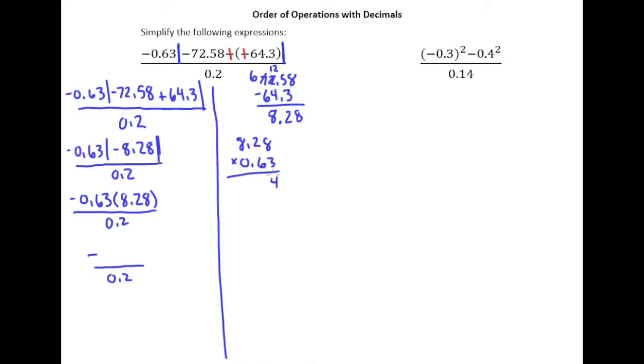So 3 times 8 is 24. 3 times 2 is 6 plus 2 is 8. 3 times 8 is 24. Put a 0 there. 6 times 8 is 48. 6 times 2 is 12 plus 4 is 16. And 6 times 8 is 48 plus 1 is 49. Add those up. We've got a 4, we've got a 16, 11, 12, and a 5. Now we've got two decimal points in 8.28, 2 and 0.63. And so we need to send the decimal back a total of 4 places. So we end up with negative 5.2164.